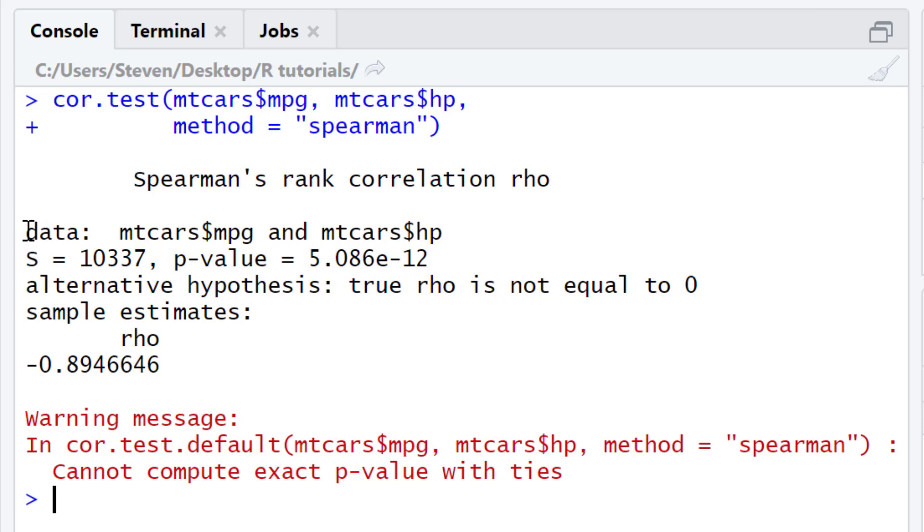As you'll see in the first line, it's stating the two variables that were involved in the Spearman correlation test. There's the test statistic, and the p-value of the test.